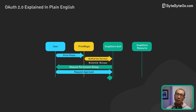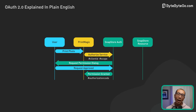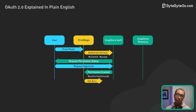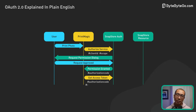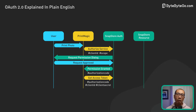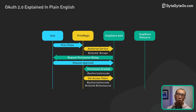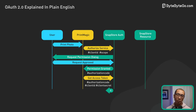Once consent is granted, the authorization server sends an authorization code back to PrintMagic. PrintMagic then presents this authorization code, its client ID, and client secret to the authorization server. The client secret is a private key shared only between PrintMagic and the authorization server.